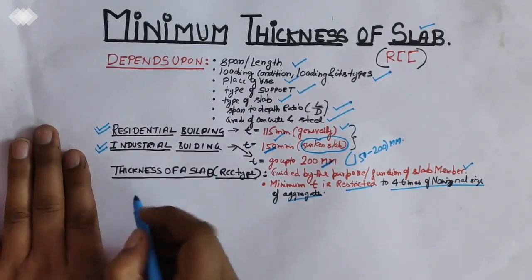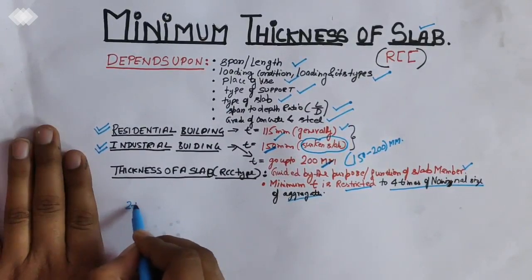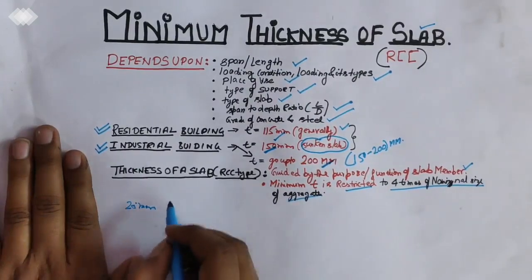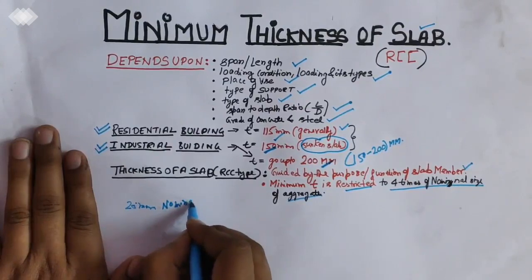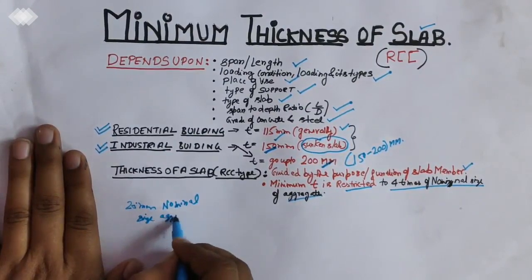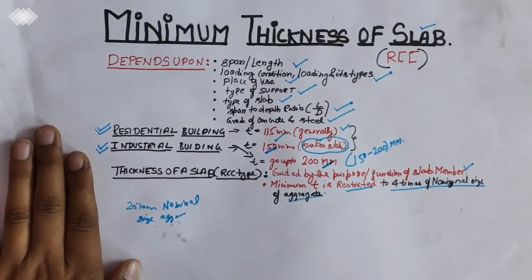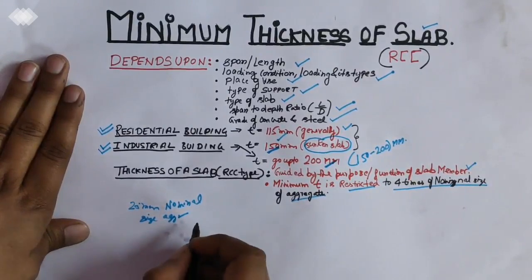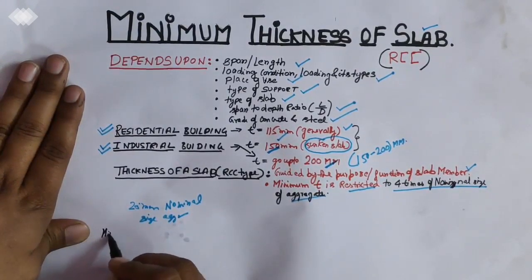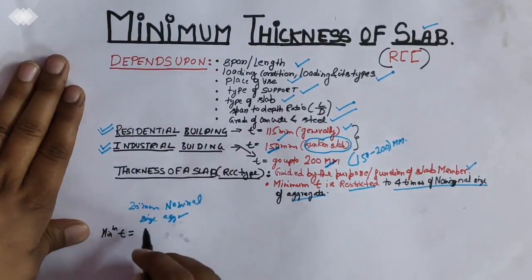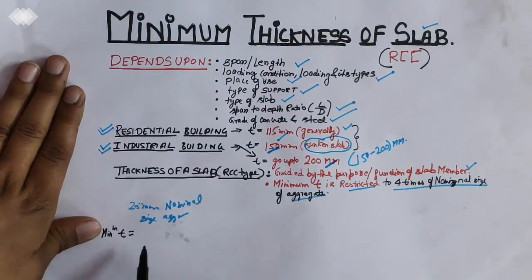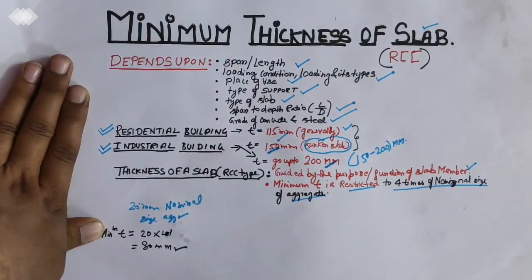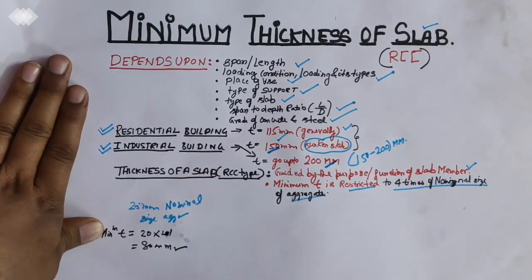For example, if you are using 20 mm nominal size of aggregate, if you are using nominal size of aggregate in concrete, minimum thickness is limited to 80 mm.